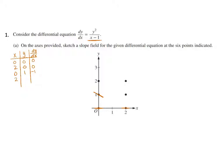Our next point is (2, 1). I'm going to substitute that in, and so that's going to be 1 over positive 1, which is positive 1. So here I'm going to have a positive slope through that point. The next point we can look at would be (0, 2). We're going to substitute in that value and I'm going to have 4 over negative 1, so that's going to give us negative 4. Here we're going to have an even steeper segment.